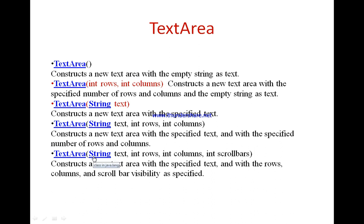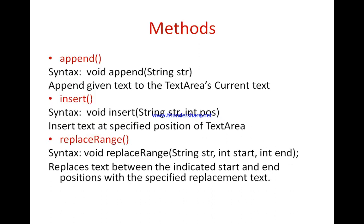The last constructor is TextArea(String text, int rows, int columns, int scrollbars). It has four parameters: text specifies the initial text, rows specifies the height, columns specifies the width, and the scrollbars parameter specifies scroll bar visibility — whether we want a horizontal, vertical, or both scroll bars.